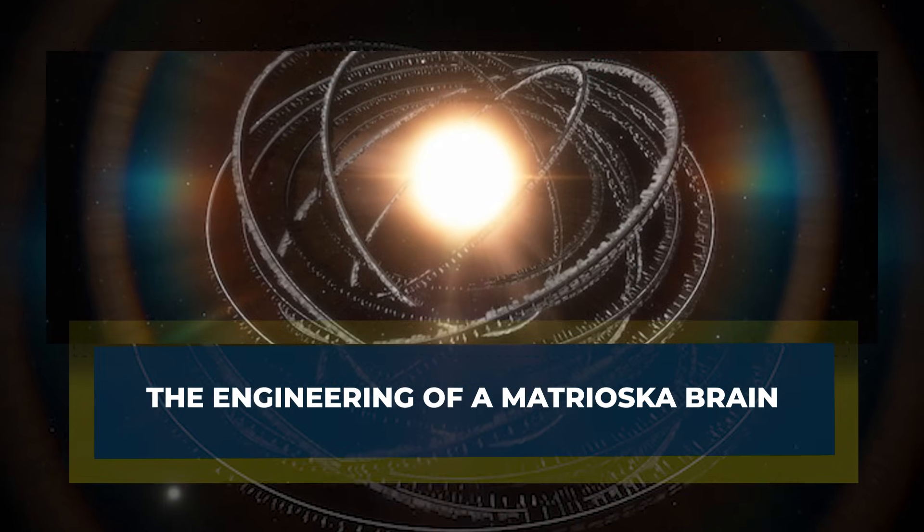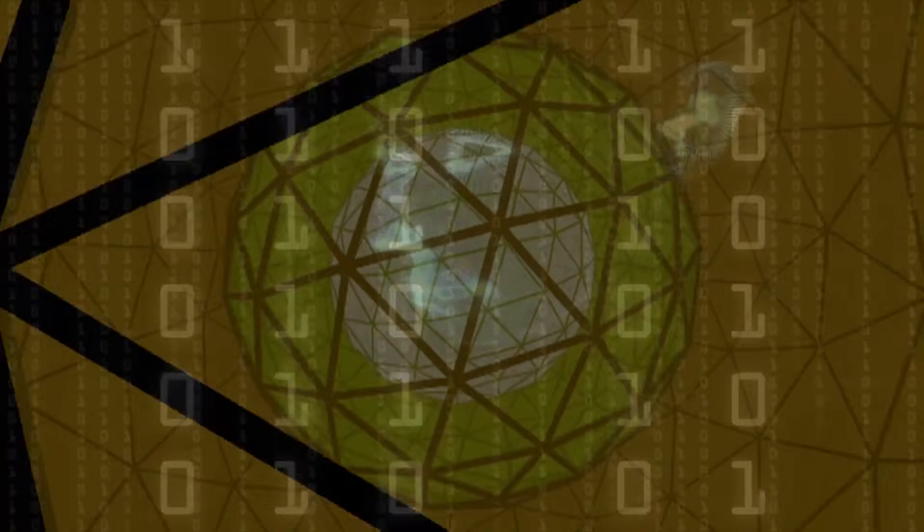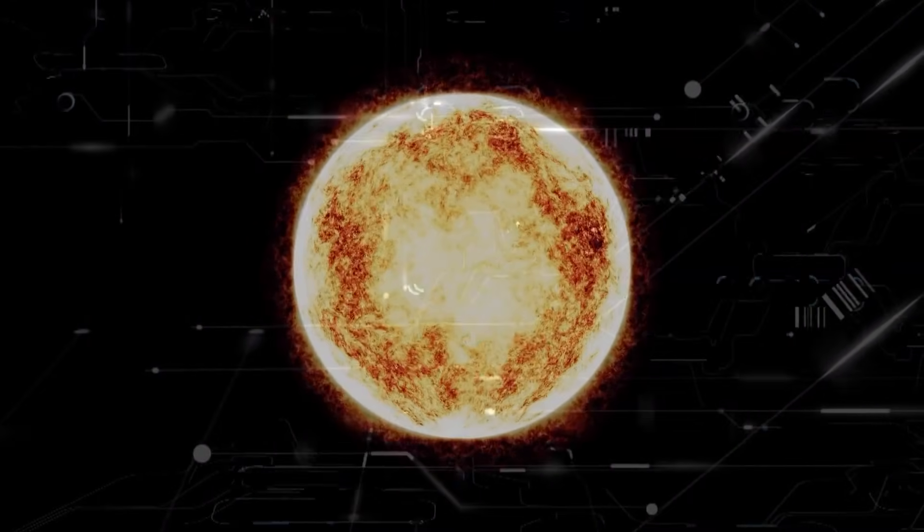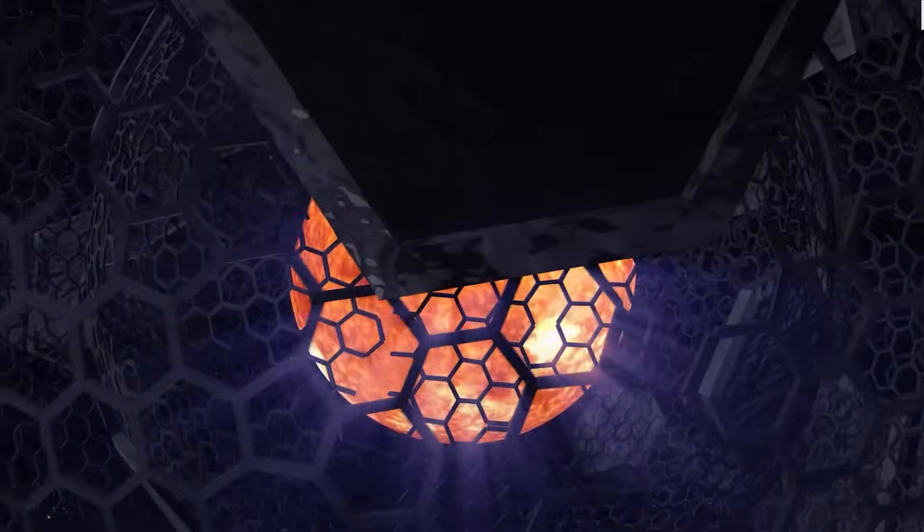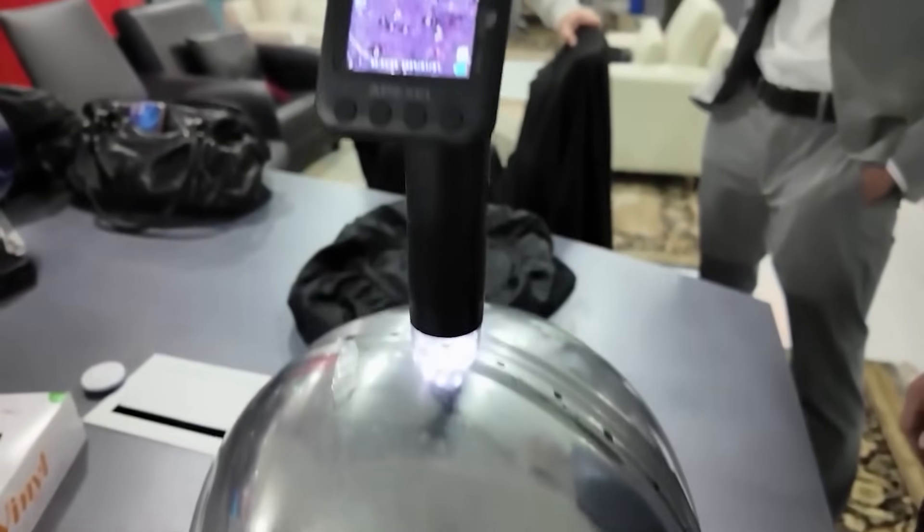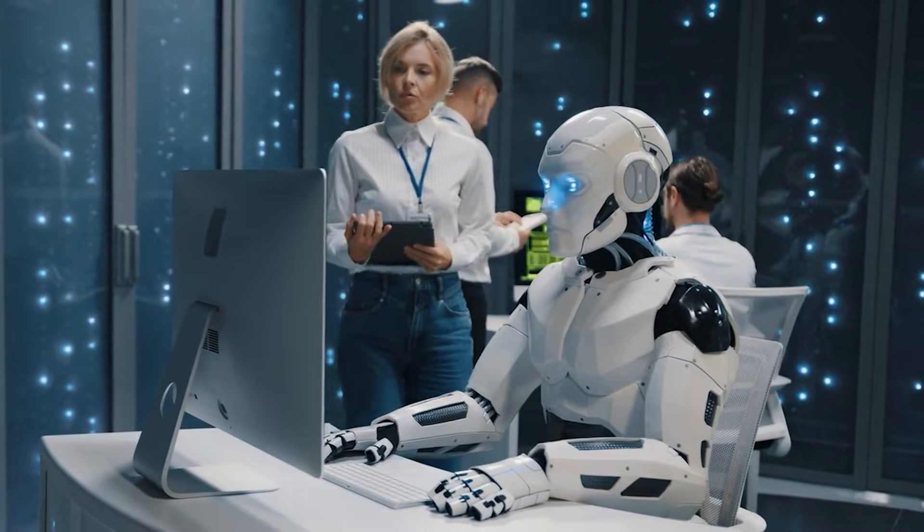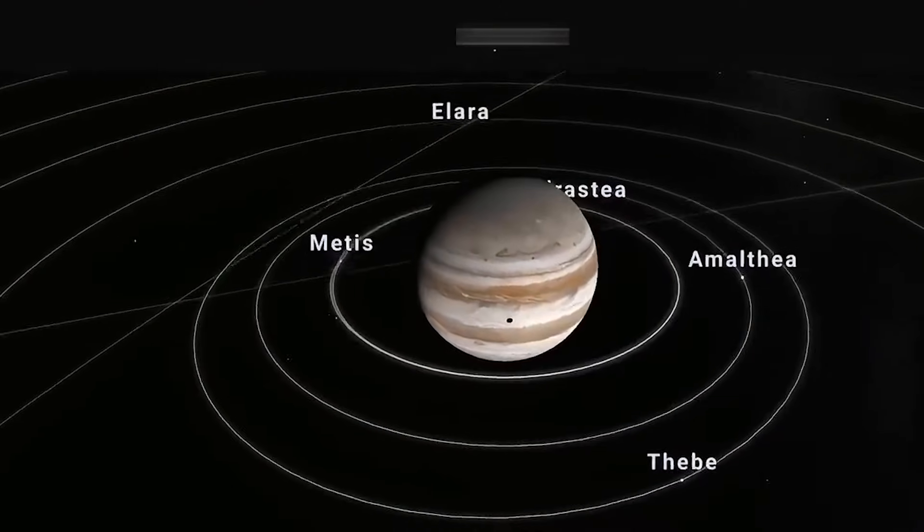Physicists quickly realized the Bugosphere matched the theory of a Matrioshka Brain. This concept describes a series of shells around a star, each harvesting heat and converting it into computational power. Inner shells run hotter and process more energy. Outer shells radiate waste heat into space. The result is a computer powered by an entire star, a mind of staggering scope.